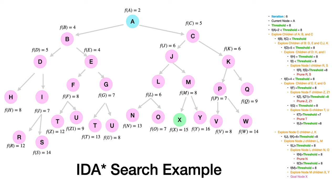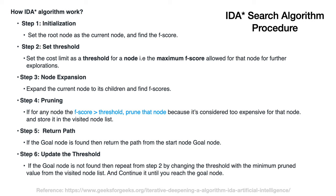This is the key advantage of IDA*: at any point in time, we only need to remember the node path values from the initial state to the current state. This requires very limited memory, which is a significant advantage over the A* algorithm.